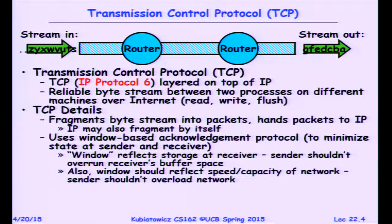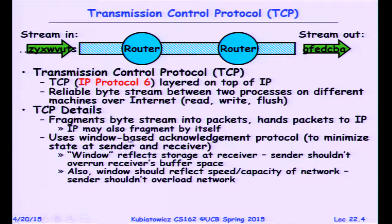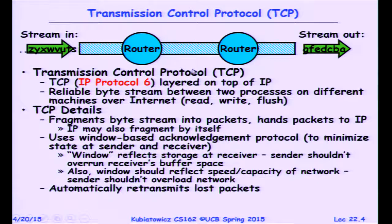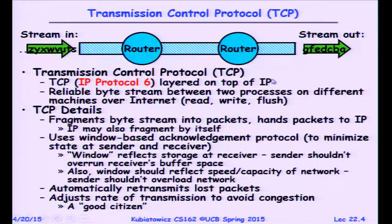TCP uses a window-based acknowledgement protocol. The window of outstanding packets reflects the storage at the receiver — you never want more packets in the network than can be stored at the receiver — but it also needs to reflect the total pipe between point A and point B. We want to adjust the number of packets automatically to just fill up the pipe from source to destination. Too many packets causes congestion; too few means we don't get full bandwidth. The protocol must also handle automatic retransmission of lost packets and automatic reordering so the TCP stream user only sees bytes in and bytes out in the same order.